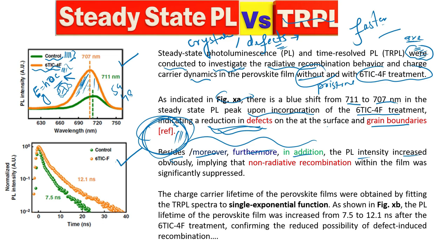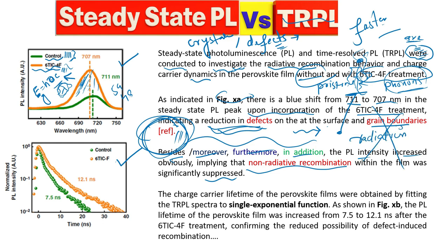The PL intensity increases, and this shows that non-radiative recombination within the film was significantly suppressed or reduced. Non-radiative recombination means there is no photon emission — when an electron is excited to a higher state but there are defects, the electron is lost there. In that recombination, we have phonons and heat, which is why we call it non-radiative: we cannot see heat, so it is not radiation.